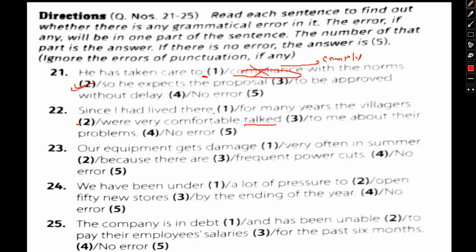Because the villagers were talking to him, so it will simply be talking in place of talked. Option 3 is where we see the error. Now let's move on to question number 23.